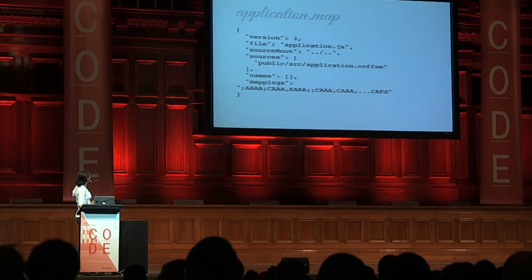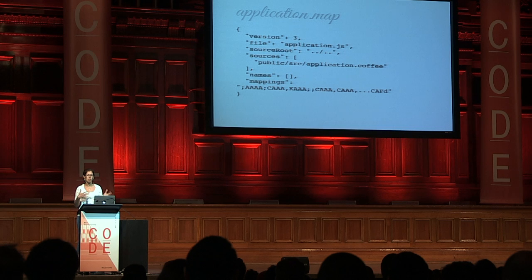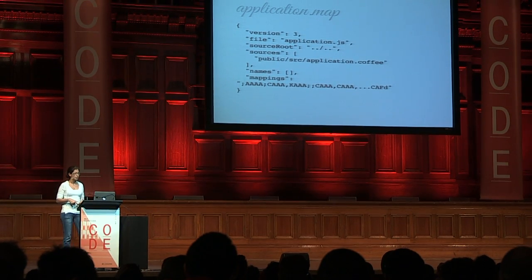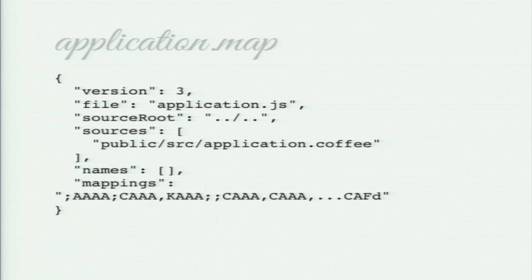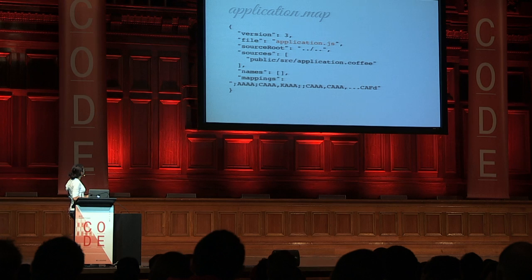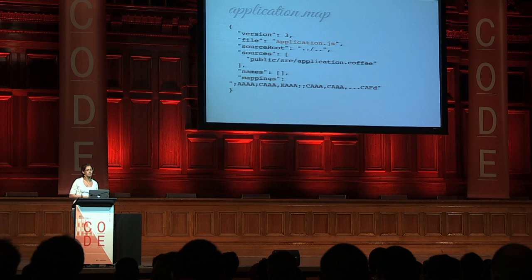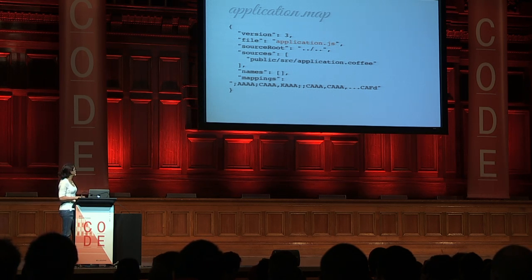Source maps has a few different versions, and the current version we're working with is number three. The important things to look at here are application.js, which is the generated file we're working with in production, and under sources you have the original file that we are referencing, which in my case would be my application.coffee.